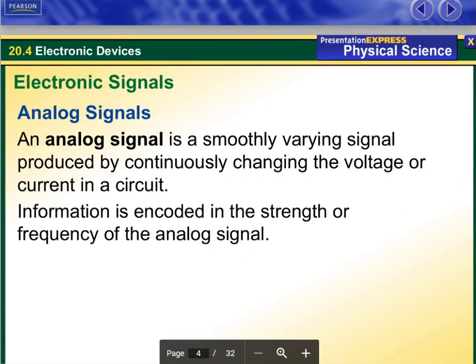An analog signal is a smoothly varying signal produced by continuously changing the voltage or current in a circuit. Information is encoded in the strength or frequency of the analog signal.